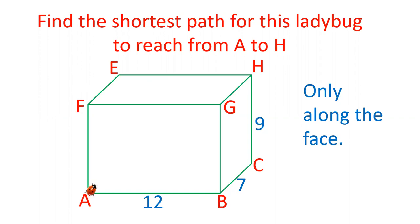There is a ladybug at the end A. It has to reach H with the shortest path. Taking the shortest path, it has to reach from A to H which is diagonally opposite. It can only move on the faces. There are 6 faces. It can move on any of the faces. Now let's see how we can solve this question.